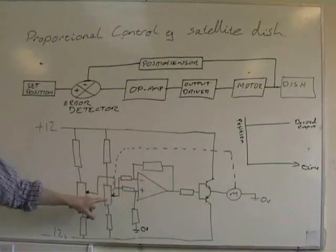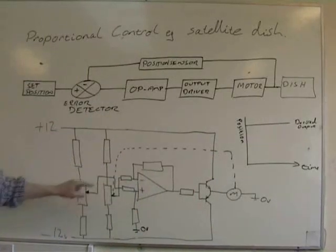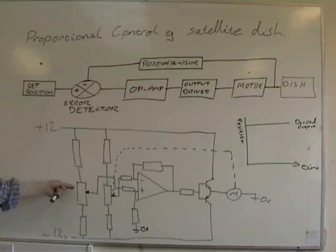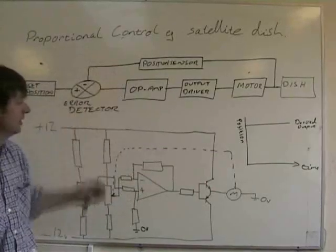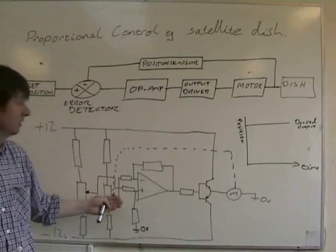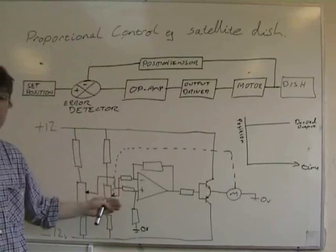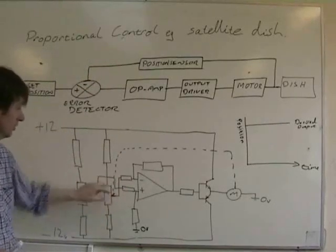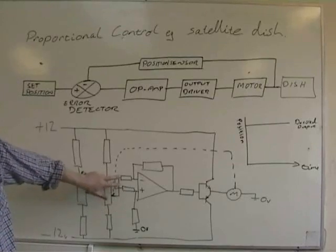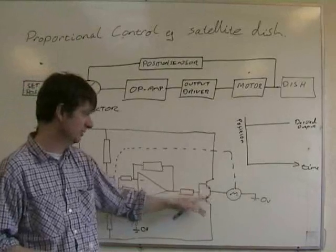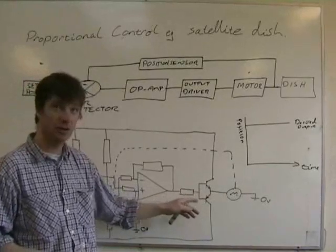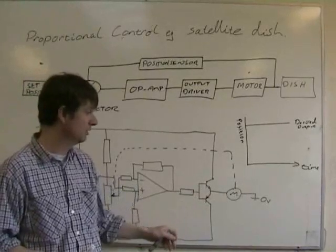The inverting input gets the feedback signal. The non-inverting input, that's where the operator, this is the one the operator would turn, and this is the one that measures the output. The op-amp in a proportional control circuit is a difference op-amp. The output will be proportional to the difference between these two inputs. That resistor protects the basis of these transistors. It's arranged in a push-pull motor driver.